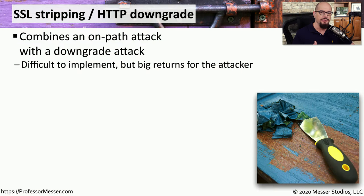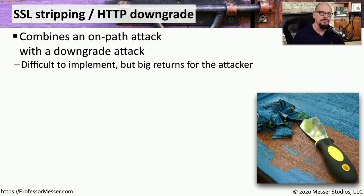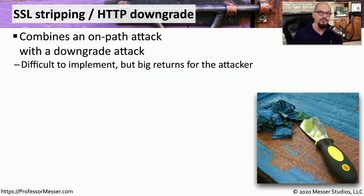Attackers know that most communication between your computer and a web server is over an encrypted channel. Very commonly, we use HTTPS to send information back and forth, knowing that all the data in that channel is encrypted and away from the prying eyes of the attacker. But the attacker can find ways to get into that data by manipulating the data flow — that is SSL stripping, or the HTTP downgrade attack. This allows an attacker sitting on the path of communication to modify it and see all of the data in that flow.